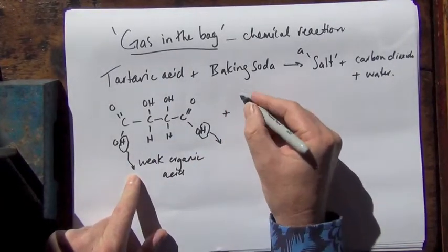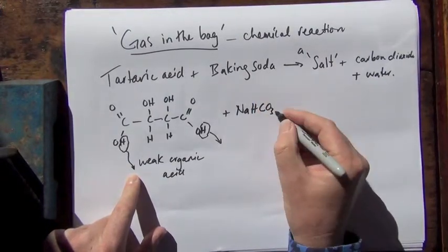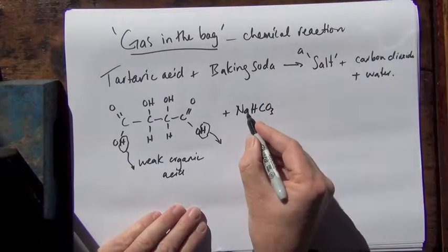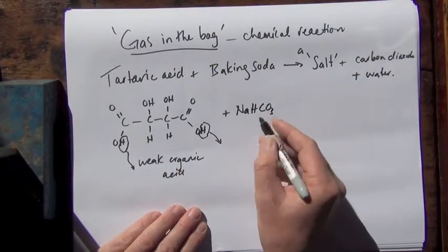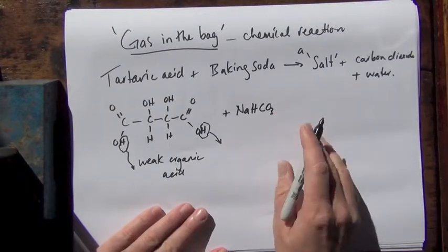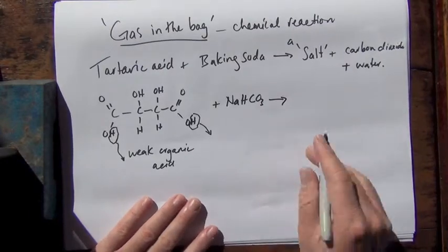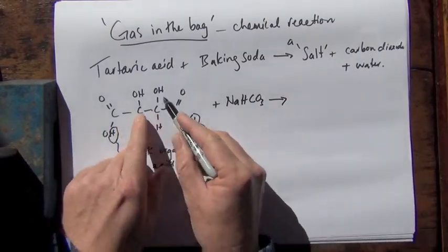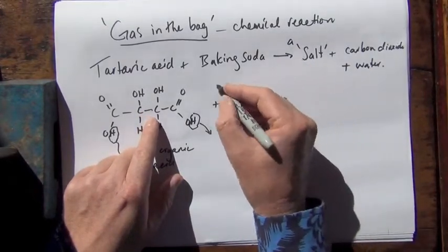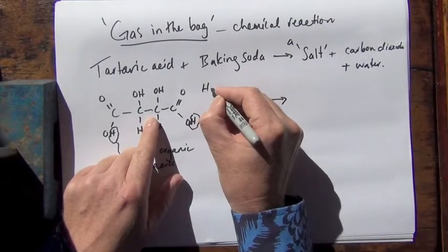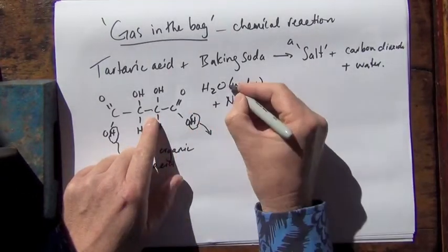So baking soda of course is sodium bicarbonate. The bi is the extra hydrogen here. Otherwise it would just be sodium bicarbonate. So that's sodium bicarbonate, the baking soda formula. And so what's produced of course is when these two compounds get together in the water medium. So we're actually adding water here, H2O. So water is being added to make these ions mobile.